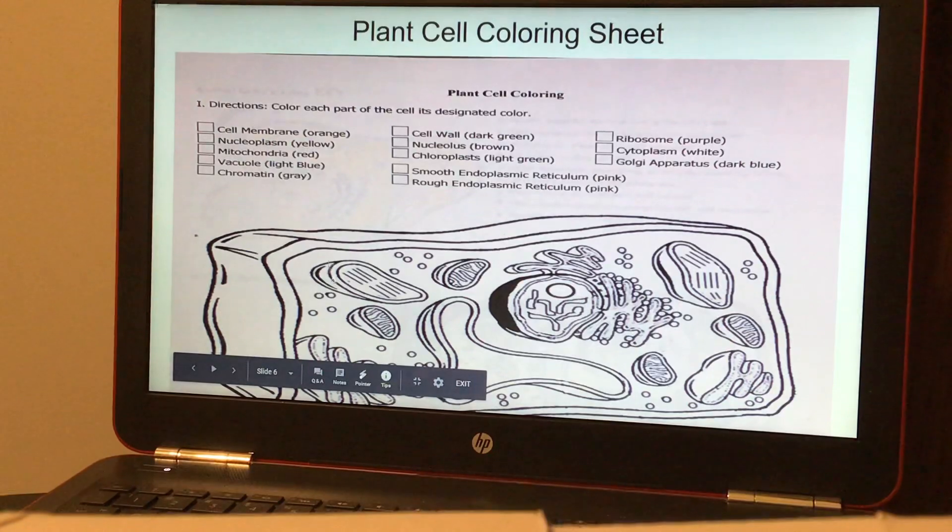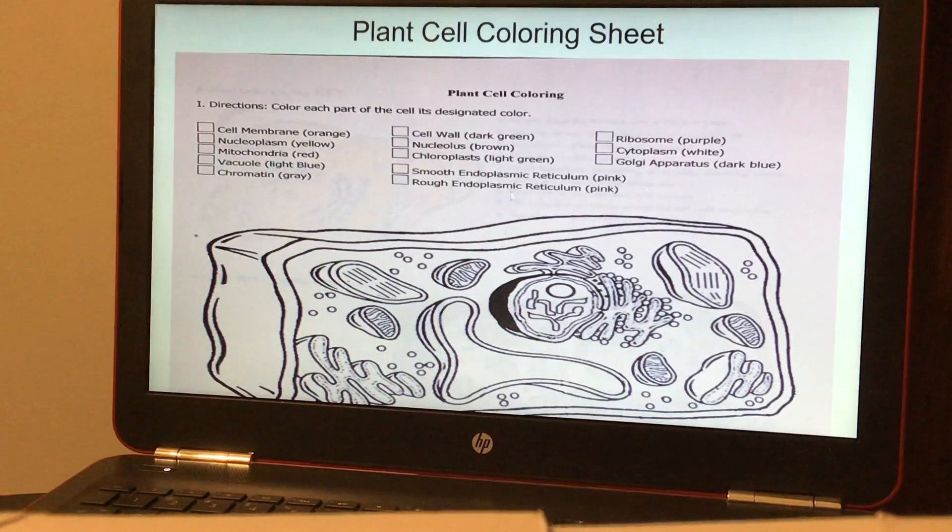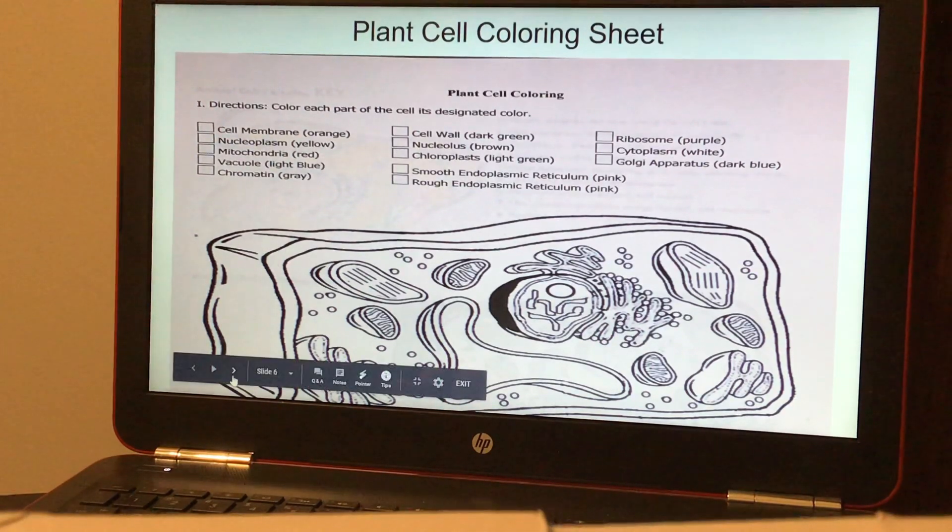And here is a copy of the coloring sheet for the plant cell, and of course, same thing. You would color whatever color it tells you. Cell membrane is orange, nucleoplasm is yellow, and so on.